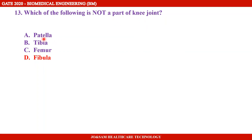The parts of the knee joint are: tibia, femur, and patella. Fibula is involved with the tibia but is not a direct part of the knee joint. So the answer is Option D: fibula.